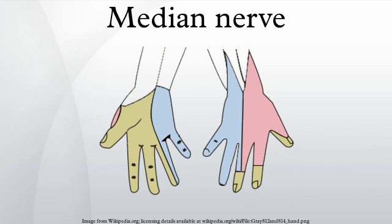Hand: the median nerve enters the hand through the carpal tunnel, deep to the flexor retinaculum, along with the tendons of flexor digitorum superficialis, flexor digitorum profundus, and flexor pollicis longus. From there it sends off several branches. First, a recurrent branch to muscles of the thenar compartment, providing motor innervation to opponens pollicis, abductor pollicis brevis, and the superficial part of flexor pollicis brevis.